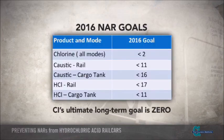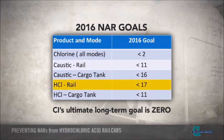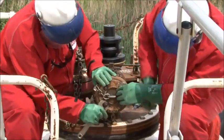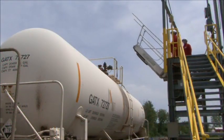The Chlorine Institute, also referred to as CI or the Institute throughout this presentation, uses the DOT 5800 reported NARs to monitor the performance of the industry's efforts in reducing preventable hydrochloric acid releases. CI has set long-term, intermediate, and annual goals by mode for all of the chemicals covered under the Institute's mission, including chlorine, caustic soda, and hydrochloric acid. For hydrochloric acid rail shipments, the goal is to have less than 17 NARs per year by 2016. The Chlorine Institute has analyzed incidents over the years and uses the analysis to develop programs and practices to prevent future incidents.